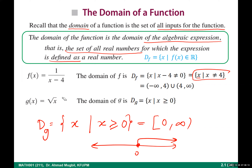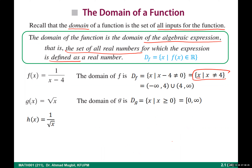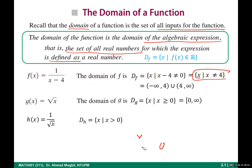Example: h(x) = 1/√x. The radicand must be ≥ 0, but also the square root (which is in the denominator) must not be zero. Combining these two conditions gives x > 0. Domain is the open interval (0, ∞).